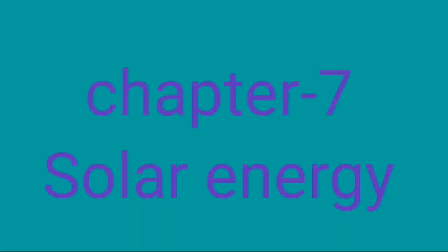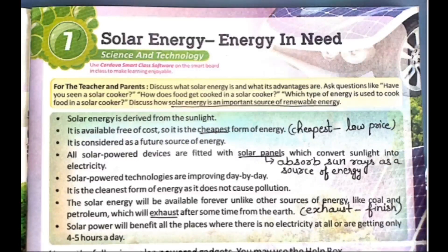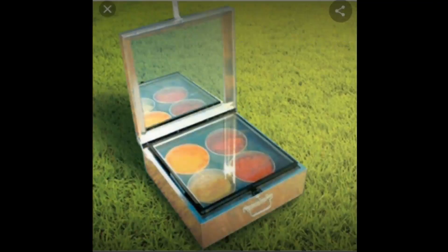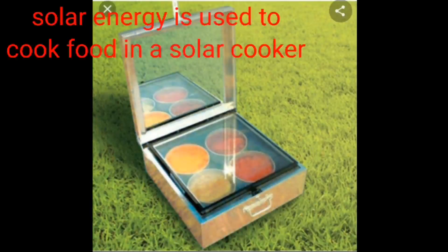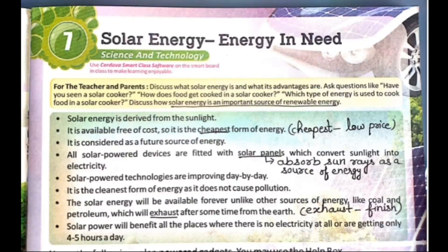Now the next chapter is solar energy - Energy in Need. Students, we get solar energy from the sun. The sun is the main source of energy on earth. Have you seen a solar cooker? Solar energy is used to cook food in a solar cooker. Solar energy is an important source of renewable energy - meaning this energy is not finished by using. It can be obtained again because we get it from natural sources like the sun.